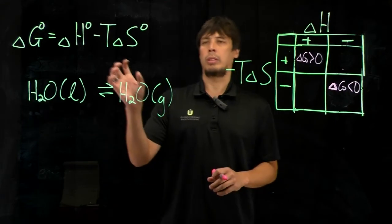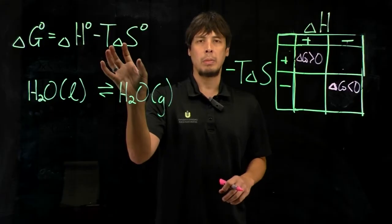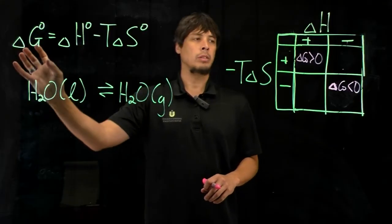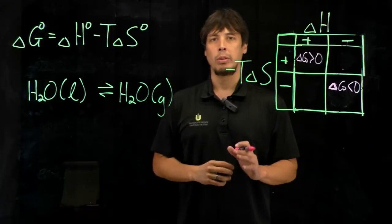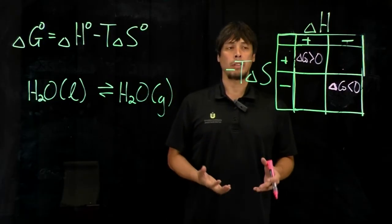So we know that when both the enthalpic term and the entropic term are negative, that delta G is also going to be negative, and therefore the reaction is going to be spontaneous or product favored.